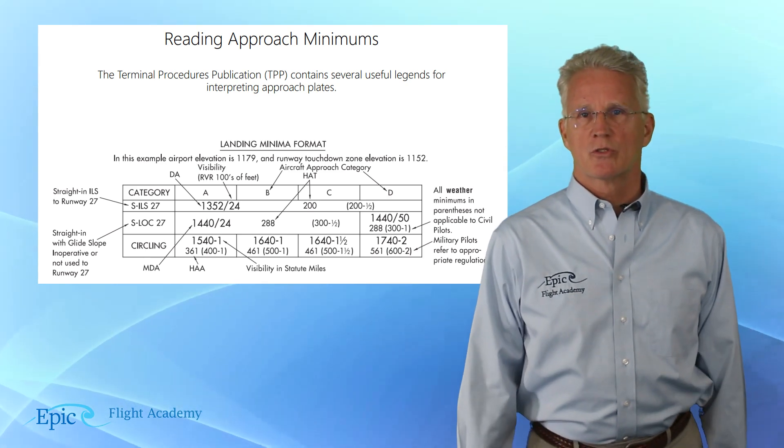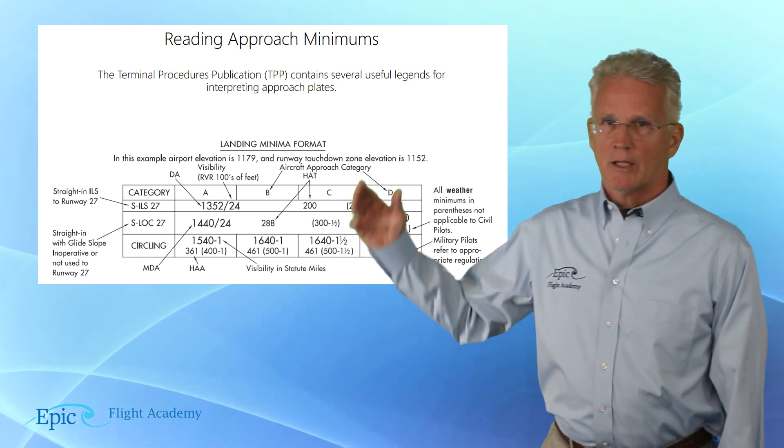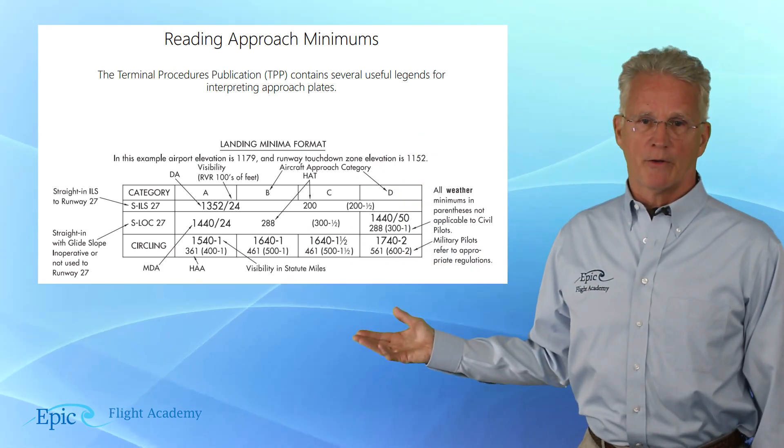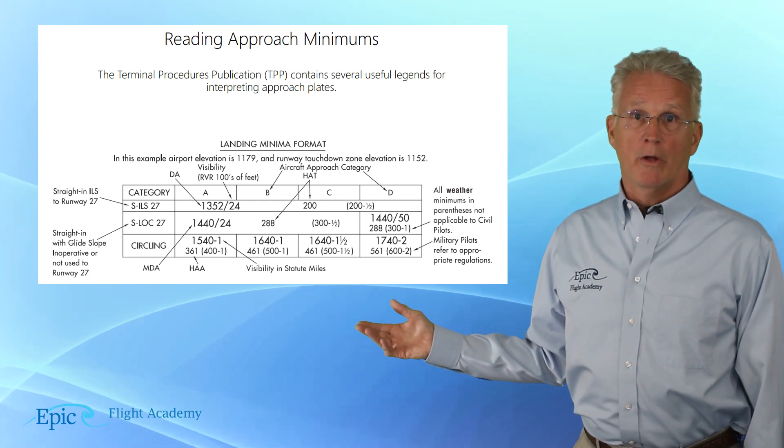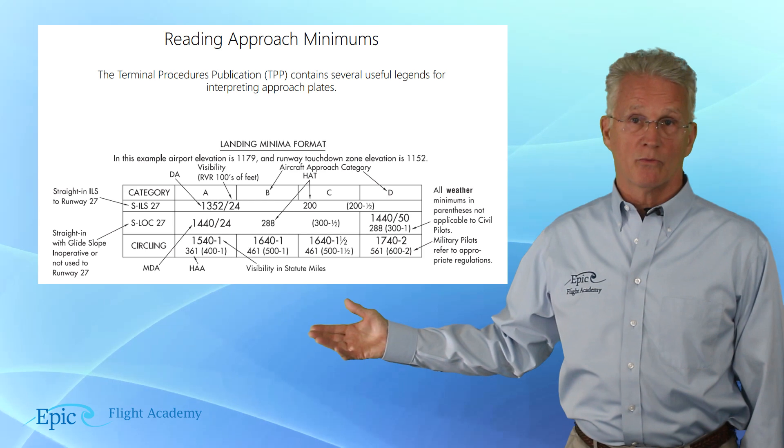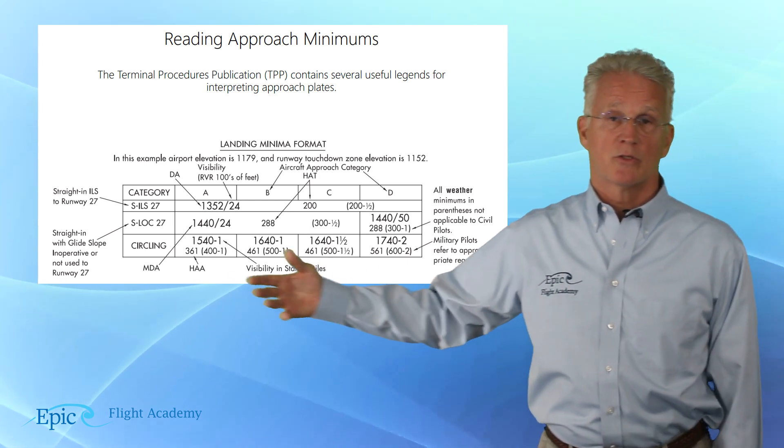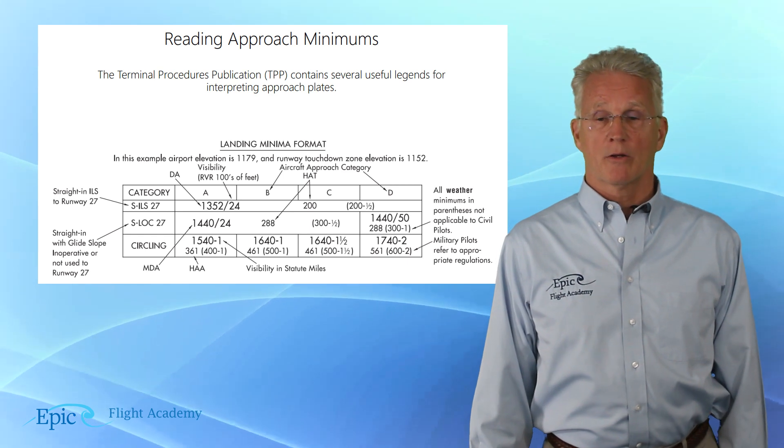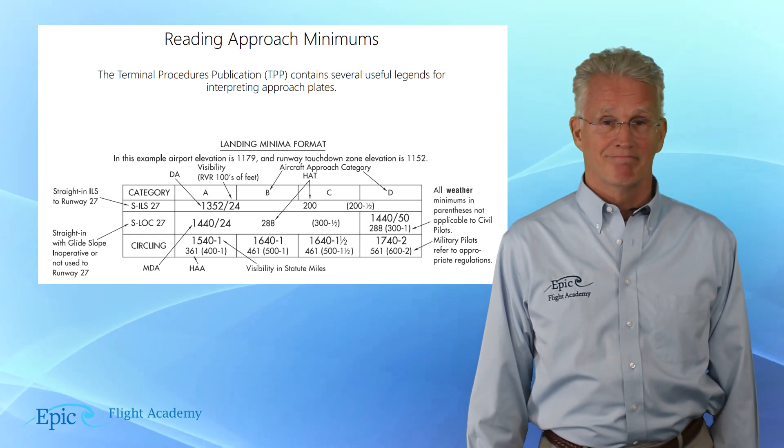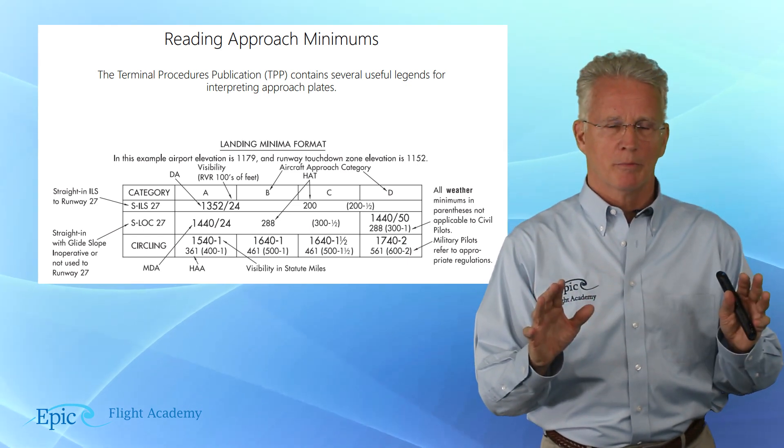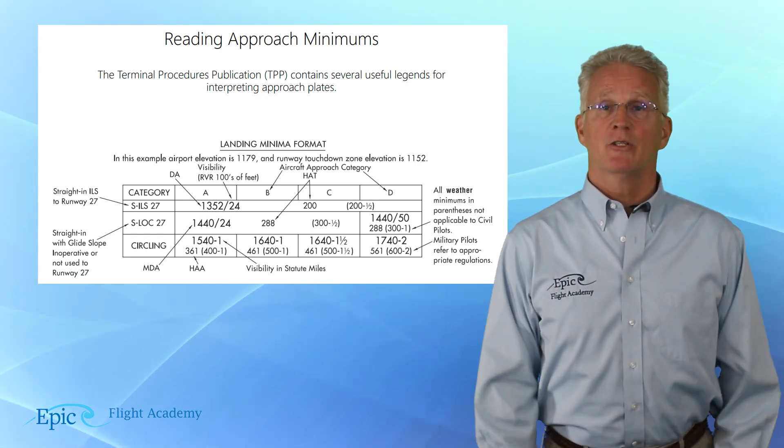Notice in the circling row, if I was circling the airport in category A, my minimum descent altitude, 1,540. Notice if I was in category B, 1,640, and you can see how it goes up as I go to category D. So these are the required approach minimums on an FAA chart.